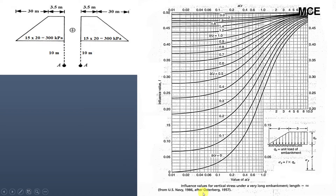We now use the Osterberg chart. On the horizontal axis we have the ratio a/z, and the curves correspond to different values of b/z. The vertical axis gives the influence values. A typical embankment loading is shown, with dimension a and dimension b labeled.